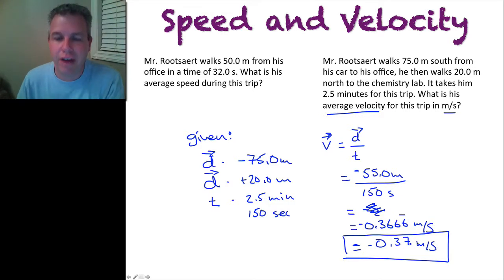Now what does the negative have to do with this? Well, the negative doesn't tell me that I'm slowing down. The negative tells me that I was moving, my velocity, my average velocity was in the negative direction. So actually my real answer could be 0.37 meters per second south.